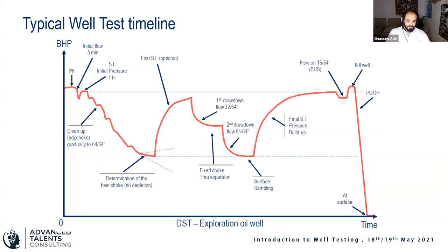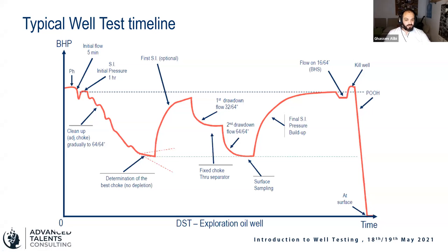The typical well test timeline is represented here by the wellhead pressure. First we open the well for the cleanup. During drilling, the well is contaminated with drilling fluids and solids, so it's not 100% representative of the reservoir's behavior. We need to clean the well up by opening it to the surface — either to the flare or a production facility — and during the cleanup phase we gradually increase the choke size, drawing reservoir fluids up to the surface at varying speeds until we have clean fluids coming from the reservoir.